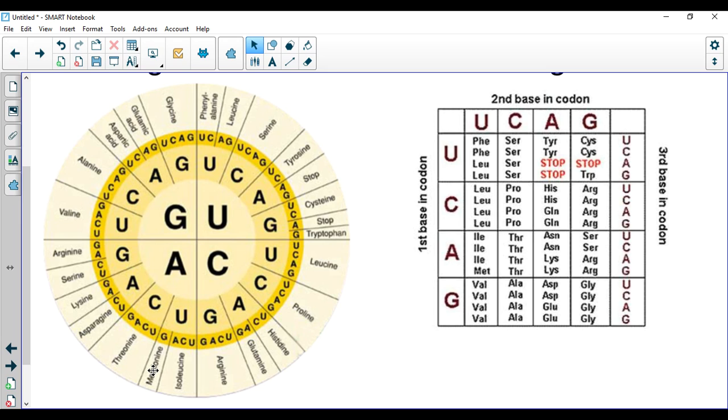What you will notice is that there are only 20 amino acids, but there is 64 codons that are possible. So what that means is that some of these amino acids have several different codons that go along with them.